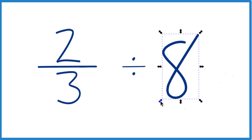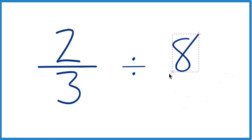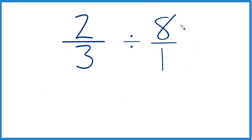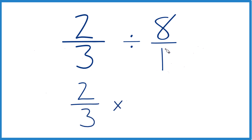Next, we'll take this eight and instead of just eight, let's call it eight over one. Because eight divided by one is still eight, but now everything's lined up nicely. So let's take two-thirds and instead of division, let's multiply by the reciprocal of eight over one. We move the numerator to the bottom and the denominator up to the top, giving us one over eight.